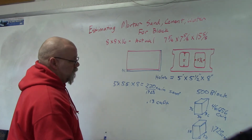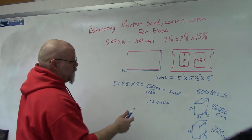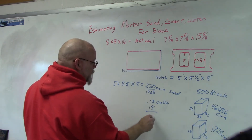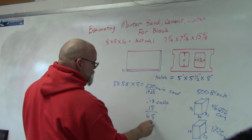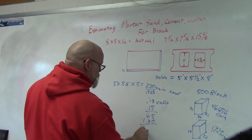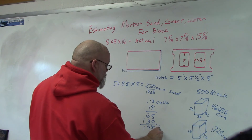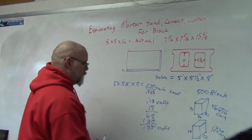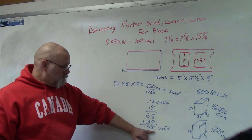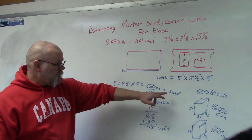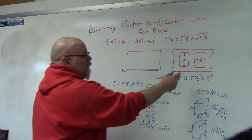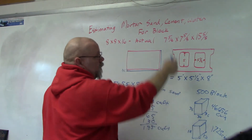If you're doing a block wall that's 15 blocks tall, take that 0.13 times 15, which gives us 1.95 cubic feet. So you would need about 1.9 cubic feet of sand for every reinforced column — from the ground all the way up to the top.